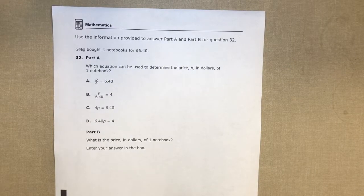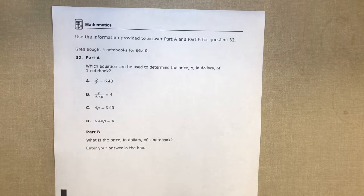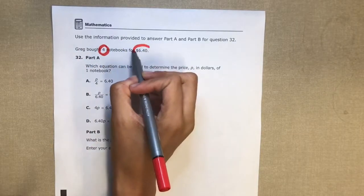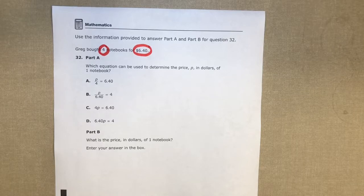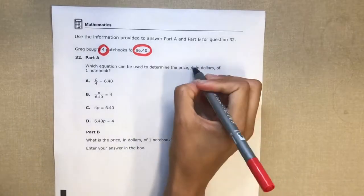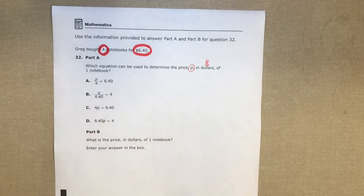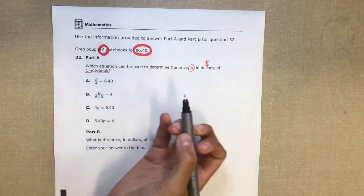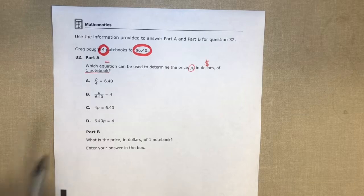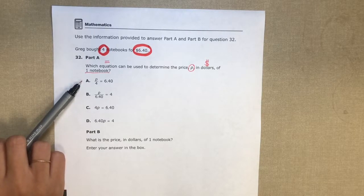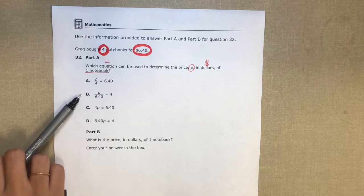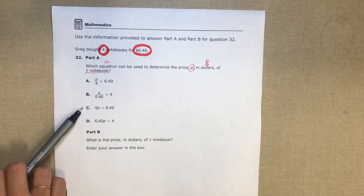Use the information provided to answer part A and part B for question 32. Greg bought four notebooks for six dollars and forty cents. Part A: which equation can be used to determine the price P in dollars for one notebook? I want to know which equation, an equation has an equal sign, can be used to figure out the cost of a notebook, and then they give me four answer choices.